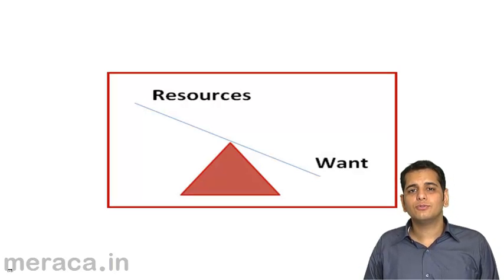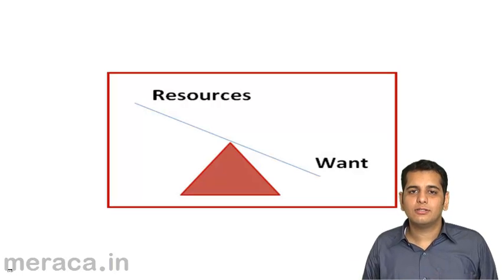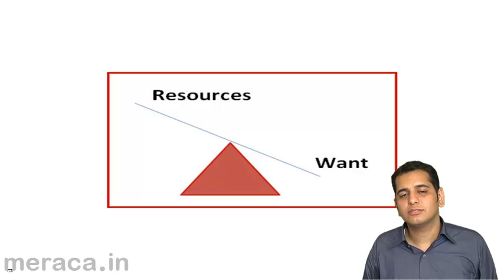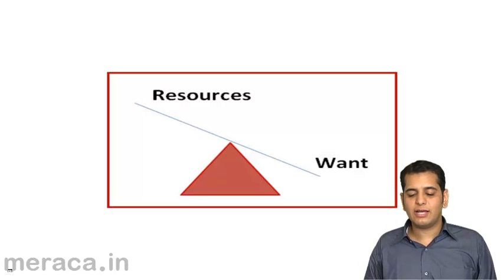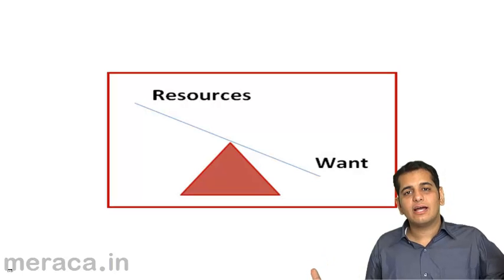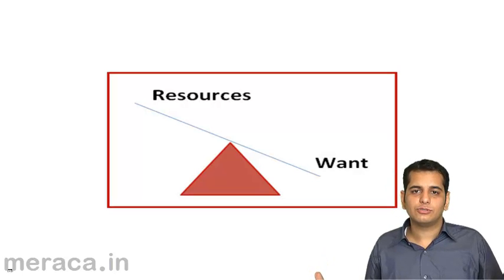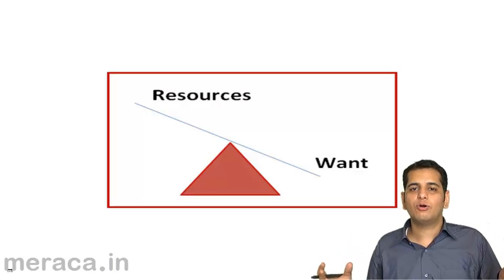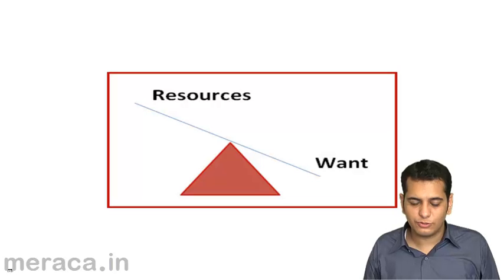Now, let me quickly run you through the whole chapter in a summarized manner. We started with economics, we defined economics as many wants and less resources, scarce resources. It's striking a balance between unlimited wants and limited resources.